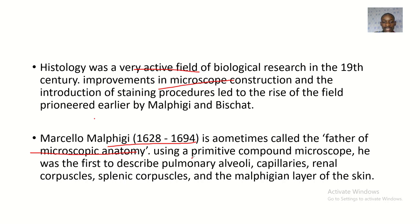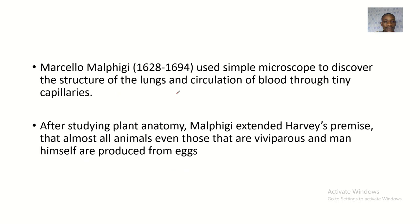Using a primitive microscope, Malpighi was the first to describe pulmonary alveoli, capillaries, renal corpuscles, splenic corpuscles, and the Malpighian layer of the skin. He used a simple microscope to discover the structures of the lungs and the circulation of blood through tiny capillaries.